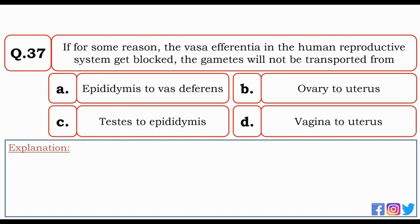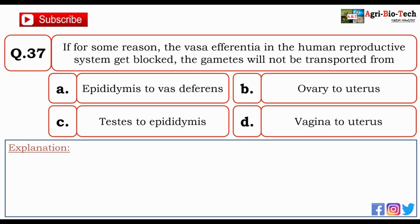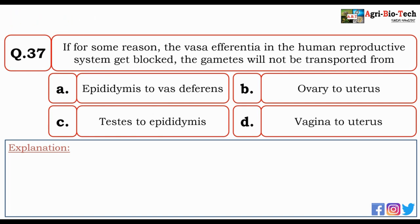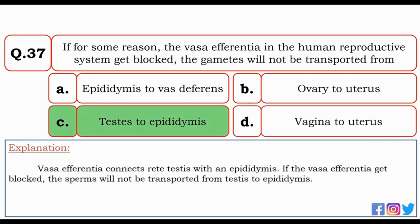Next question: if for some reason the vasa efferentia in the human reproductive system get blocked, gametes will not be transported from — epididymis to vas deferens, ovary to uterus, testes to epididymis, or vagina to uterus? The correct answer is C — testes to epididymis. Vasa efferentia connects the rete testes with the epididymis. If the vasa efferentia get blocked, sperm will not be transported from testes to epididymis.